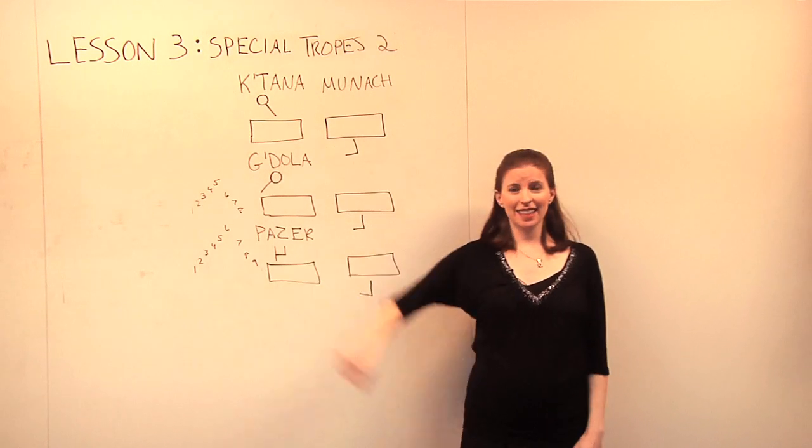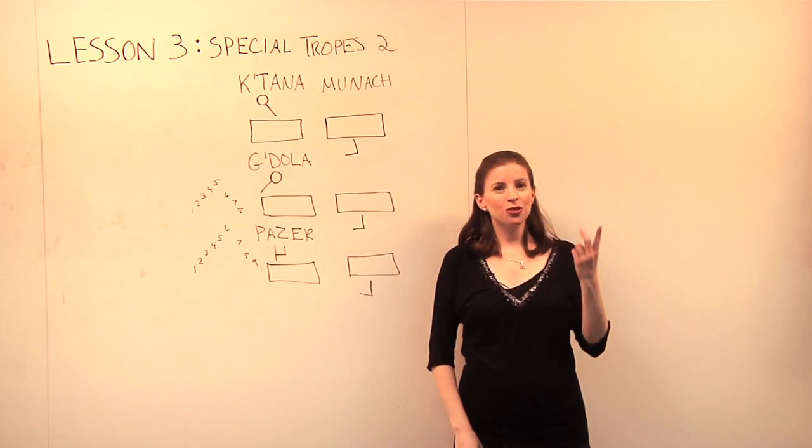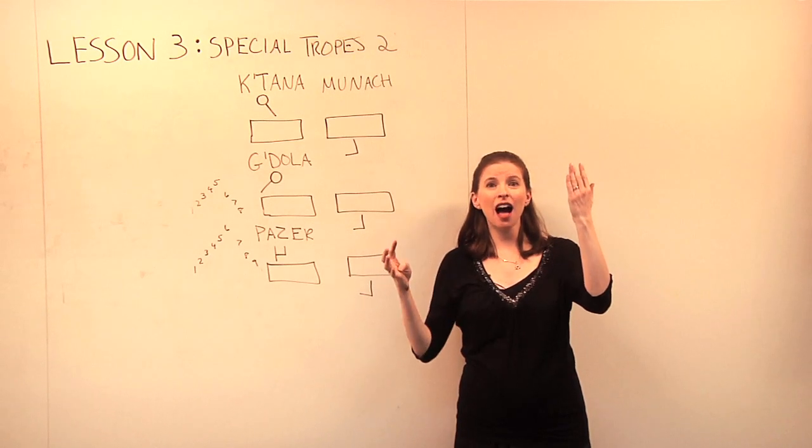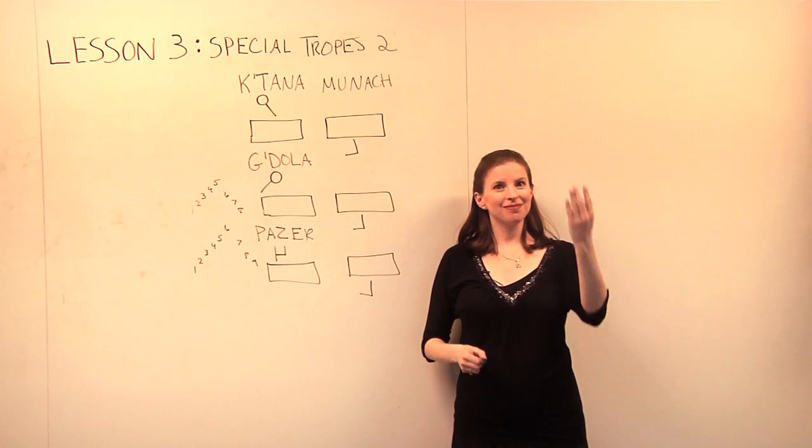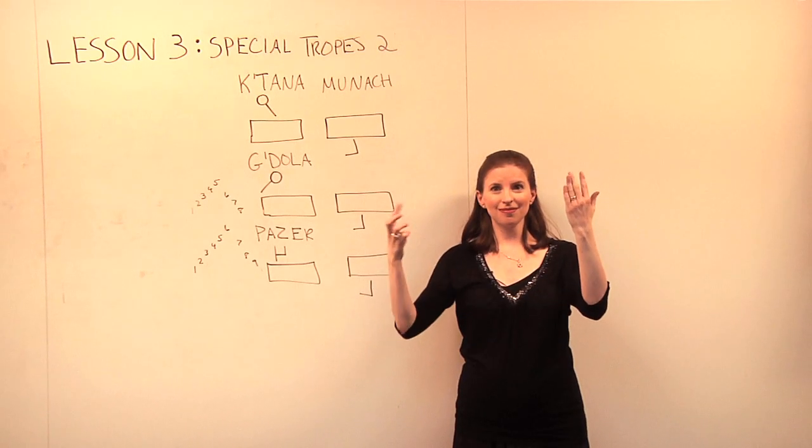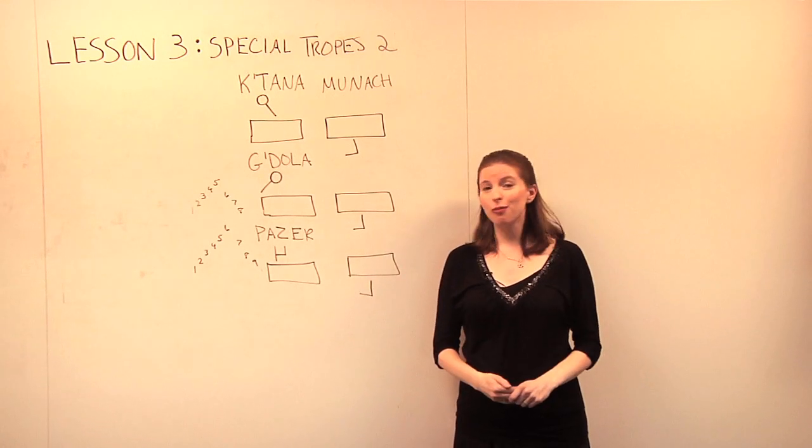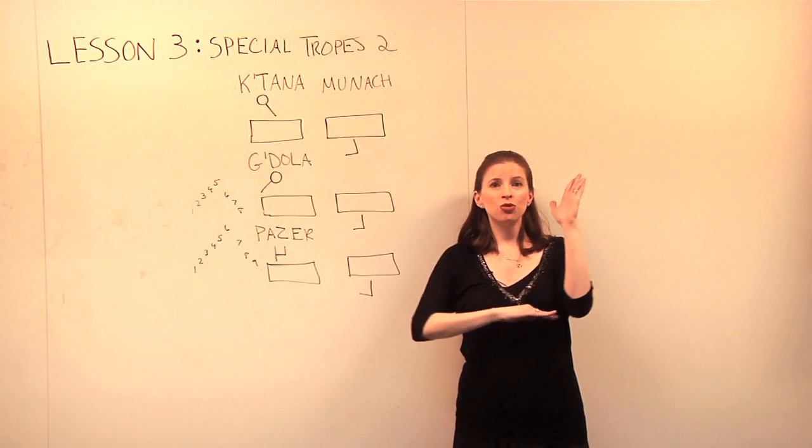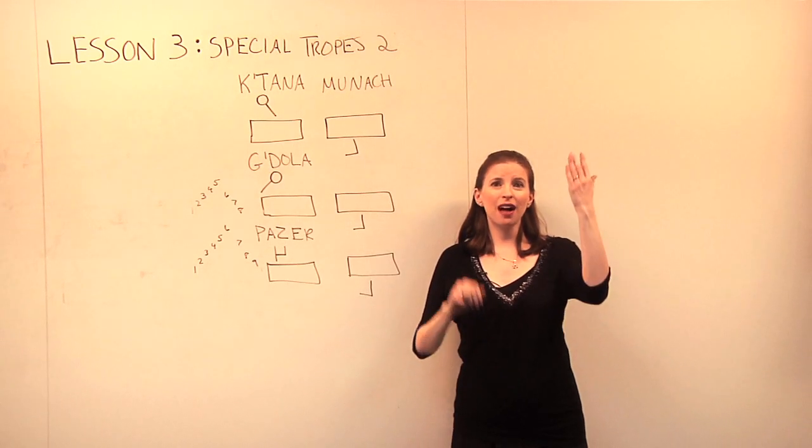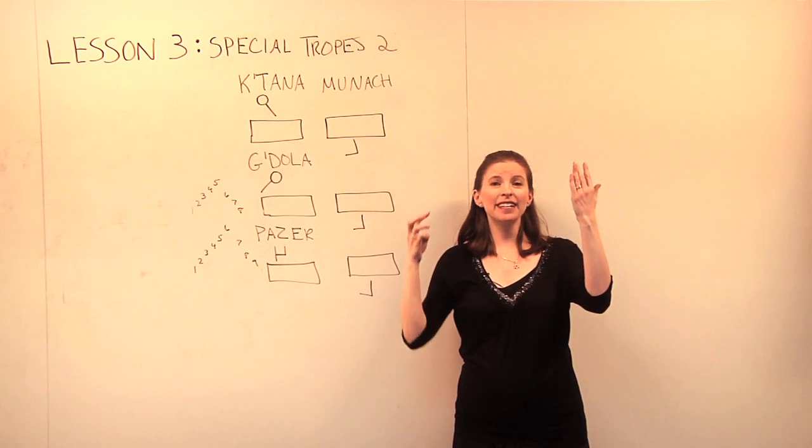Pazer sounds like this. One, two, three, four, five, six, seven, eight, nine. With Munach before it. Munach! Munach! One, two, three, four, five, six, seven, eight, nine.